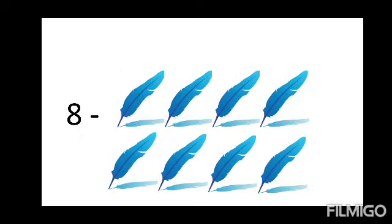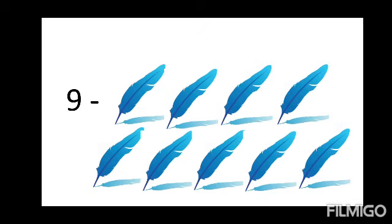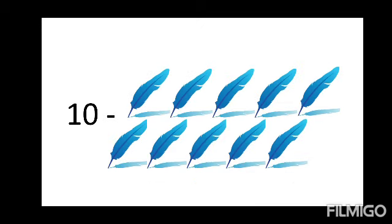Very good! Now in this picture how many quills are there? Count it: one, two, three, four, five, six, seven, eight. Eight — very good! Now in the next picture how many quills are there? Count it: one, two, three, four, five, six, seven, eight, nine. Very good! Now in the next picture how many quills are there? Count it: one, two, three, four, five, six, seven, eight, nine, ten. Say it once again and repeat it!